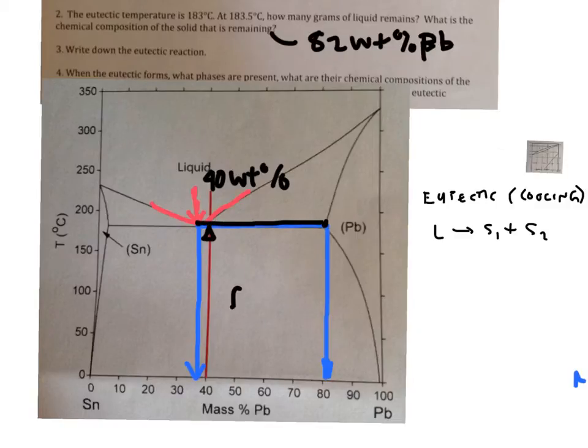So the fraction of liquid is equal to that 82 minus 40. I'm taking this point, I'm subtracting this point because we're computing the fraction of liquid. And I'm dividing that by the bottom of the fulcrum, which is this point minus this point.